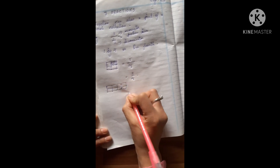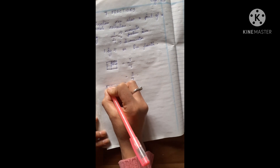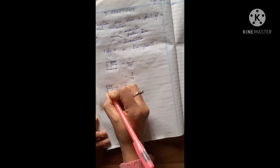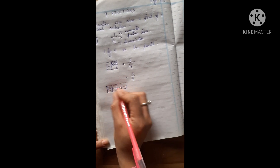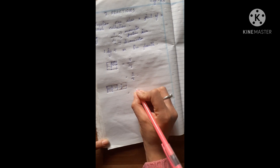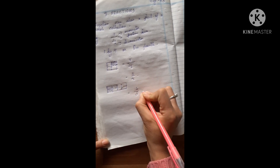There are eight boxes, and if we shade three of them, what will be the fraction? How many boxes are there? There are eight boxes and then we shaded three. That means this fraction will be three by eight. Got my point?